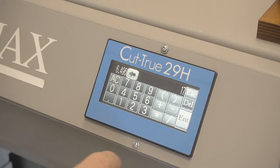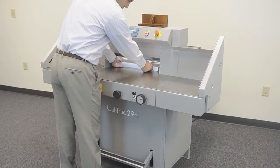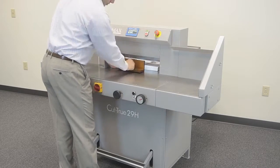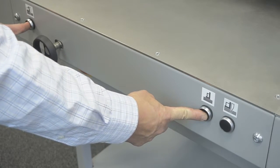For a basic cutting job, select or set the program using the LCD control panel, which will automatically adjust the back gauge. Next, slide the paper stack into position and use the wooden paper push to safely align the stack.